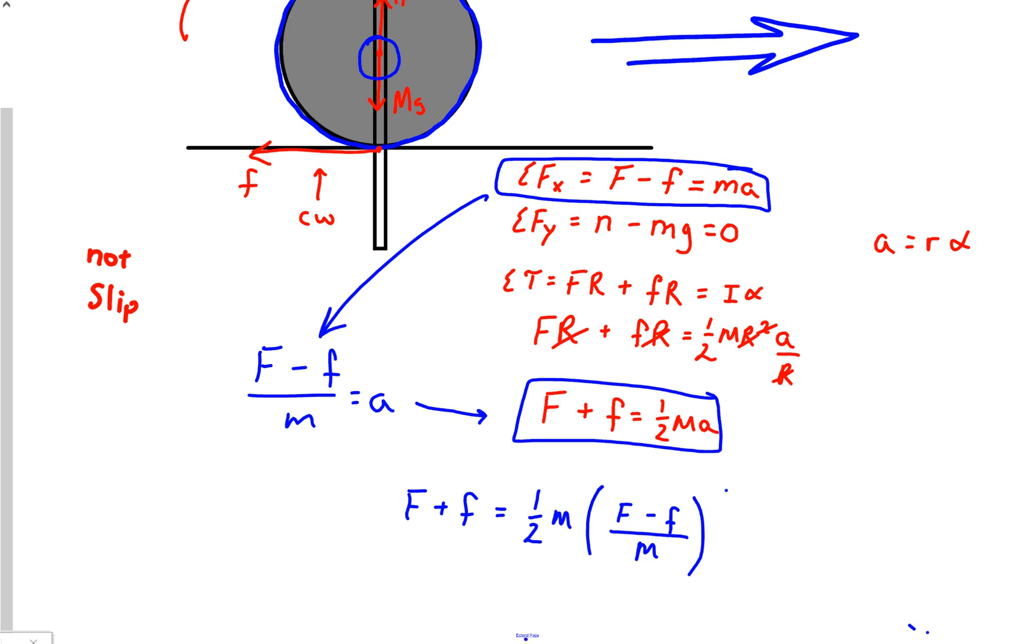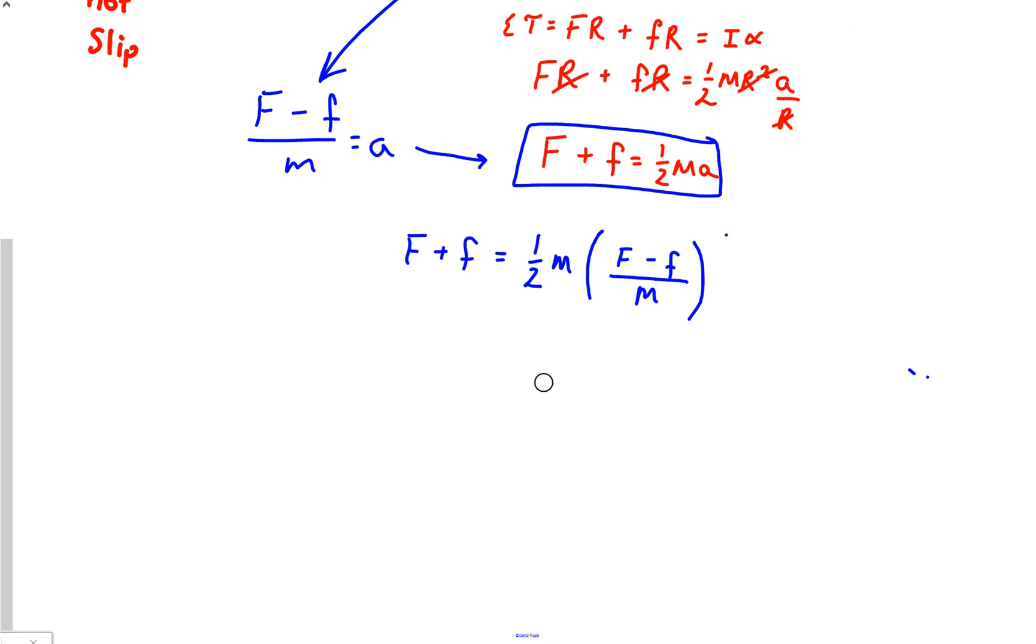And now we just need to do a little algebra on this. And what would also be nice if I could actually click that extend the page button instead of just drawing blue ink. Alright. So, now this is kind of neat. Check this out. My M's actually cancel. So I end up with, let's move that to, so that's 2F plus 2 lowercase f equals, now this is just a cute little solution, isn't it?